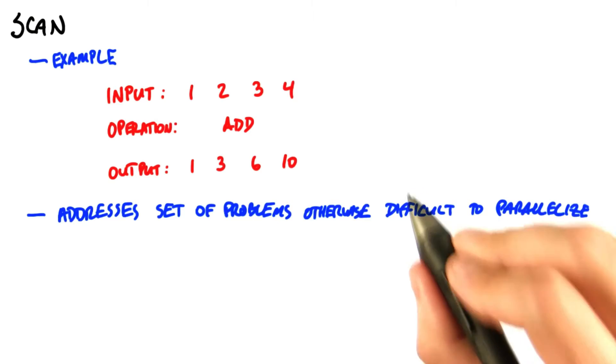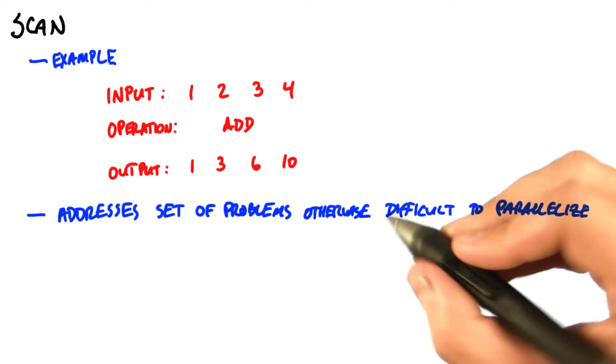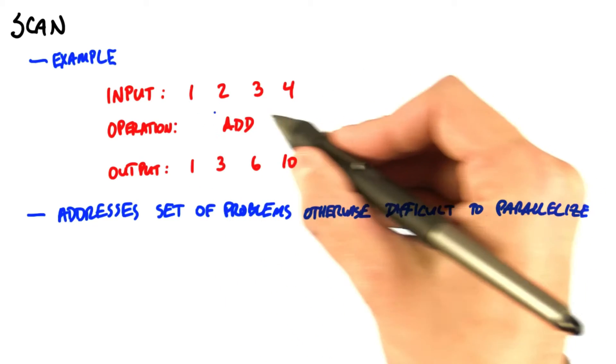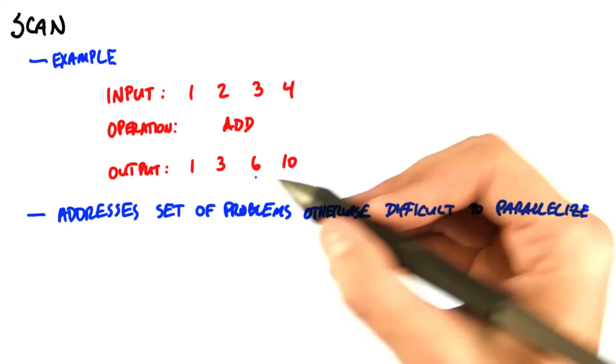Now scan is important because it allows us to address a set of problems that seem difficult to parallelize. At first glance, it might seem difficult to compute this output from this input in parallel because each element in the output depends on the previous element.